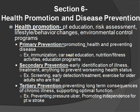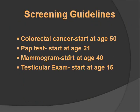Secondary prevention is early identification of illness and treatment to prevent worsening of health — such as screening, early detection and treatment, and exercise for older adults who are frail. Tertiary prevention focuses on preventing the long-term consequences of chronic illness and supporting optimal function — examples include preventing pressure ulcers for a patient on bed rest, and promoting independence for a stroke patient.